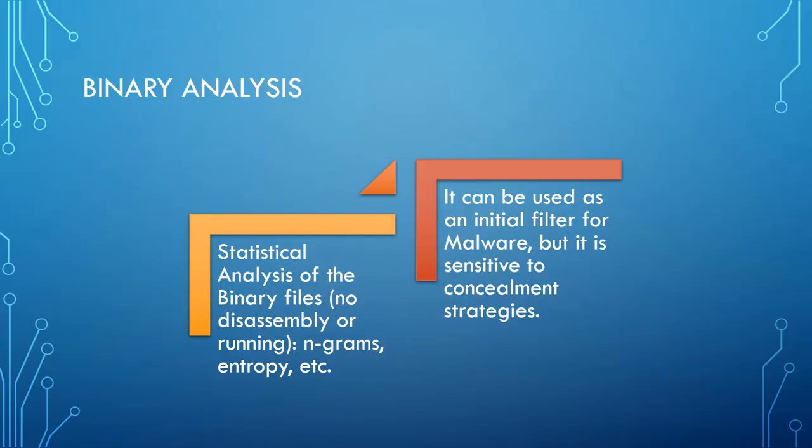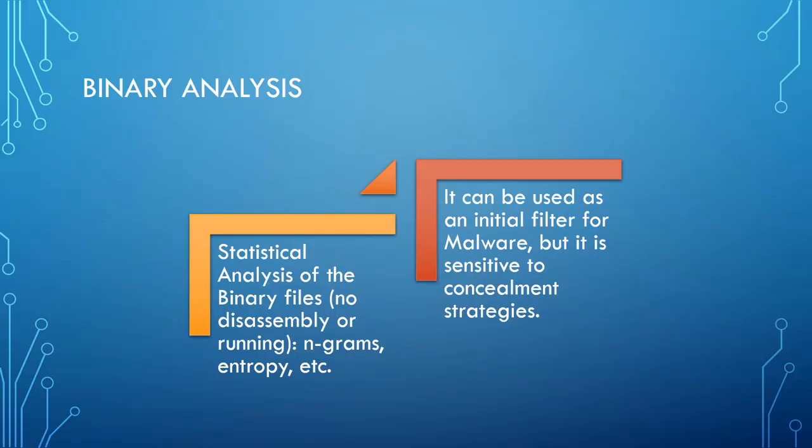You can also take a lazier approach and check other things in the binary file without running it or performing deep analysis. Binary analysis tries to get statistics about the malware. You can use N-gram models — quite popular now because of LLMs — entropy-based models, and try to get information from the malware just by analyzing its binary contents.